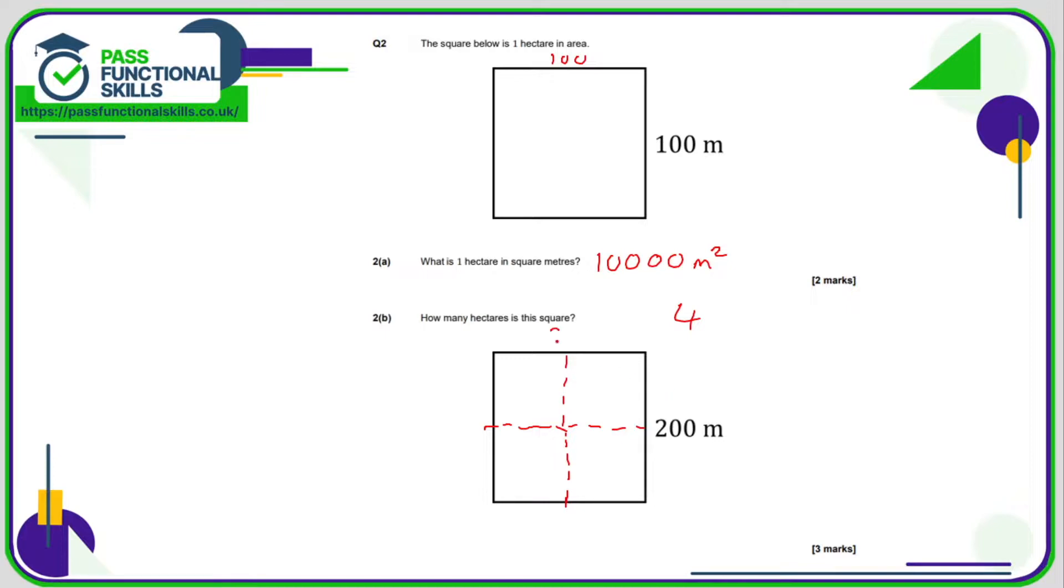What you could do is 200 times by 200, that comes to 40,000. And that is 4 times greater than 10,000 metres squared. So again, you can see that it's 4 hectares, not 2.